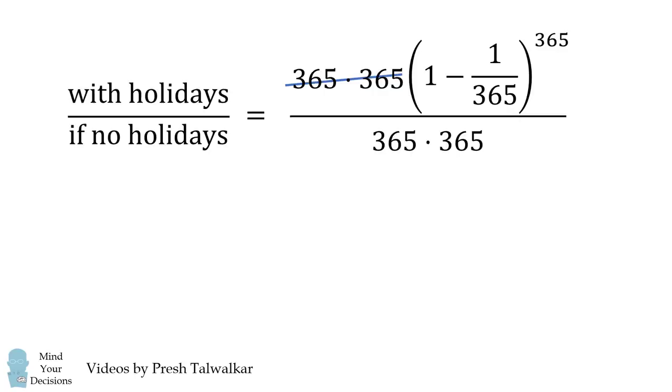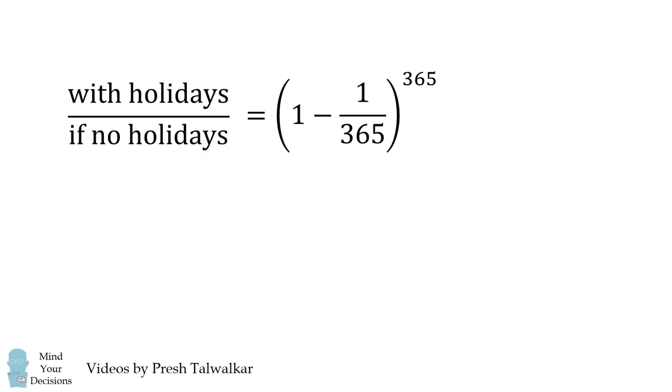we'll cancel out these factors, and we end up with 1 minus 1 over 365, this quantity raised to the power of 365. Interestingly, this is approximately equal to 1 over E. And the constant E comes out of nowhere.